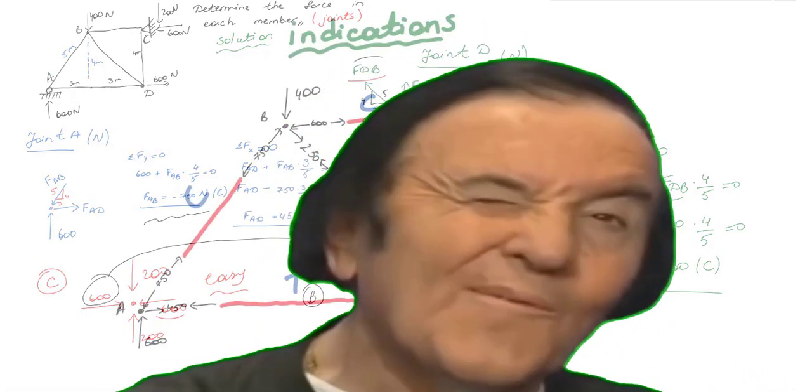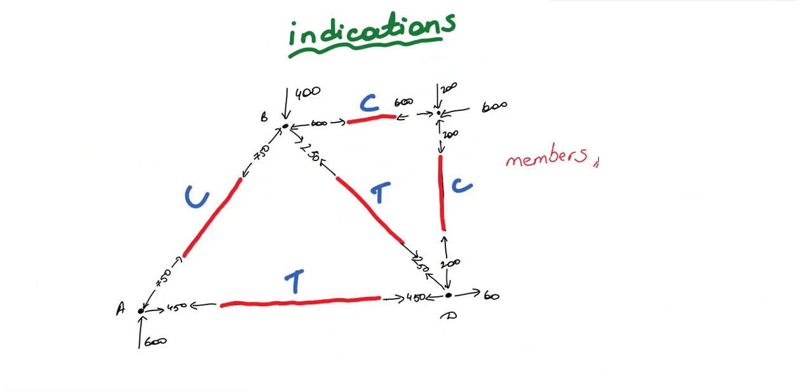It is the final free body diagram with the indications of compression and tensions. Please pause this one and understand how we found these numbers and why we wrote in this way, and why they are compression, why they are tension.